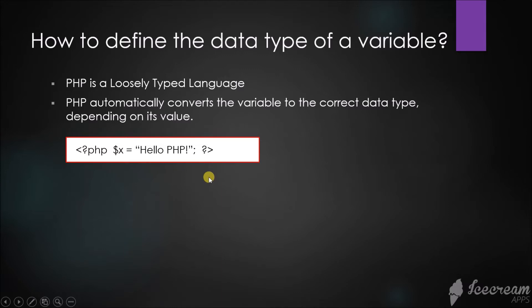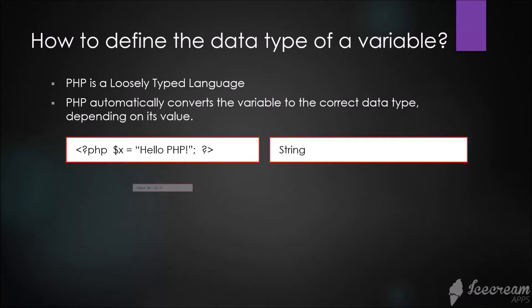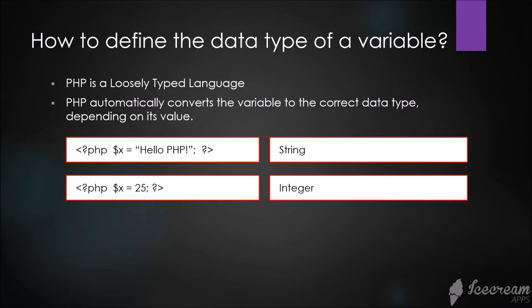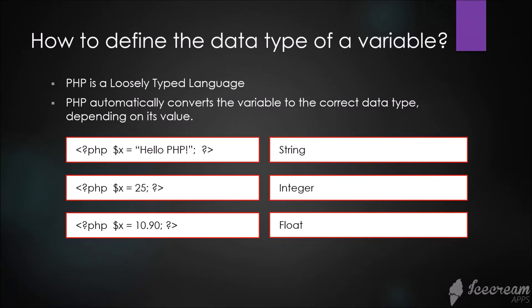If the variable changes its value to a number like 25, then the data type will automatically become an integer. If the value is 10.90, then PHP will adjust its data type to become float. That's how PHP works on data types for variables because PHP is a loosely typed language.